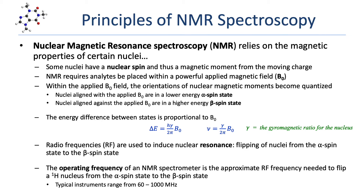An NMR spectrometer measures the frequencies of those resonances. NMR spectrometers are often referred to by their operating frequency, which is the approximate RF frequency needed to flip a hydrogen nucleus from the alpha spin state to the beta spin state. Typical instruments have operating frequencies from 60 to over 1,000 megahertz.